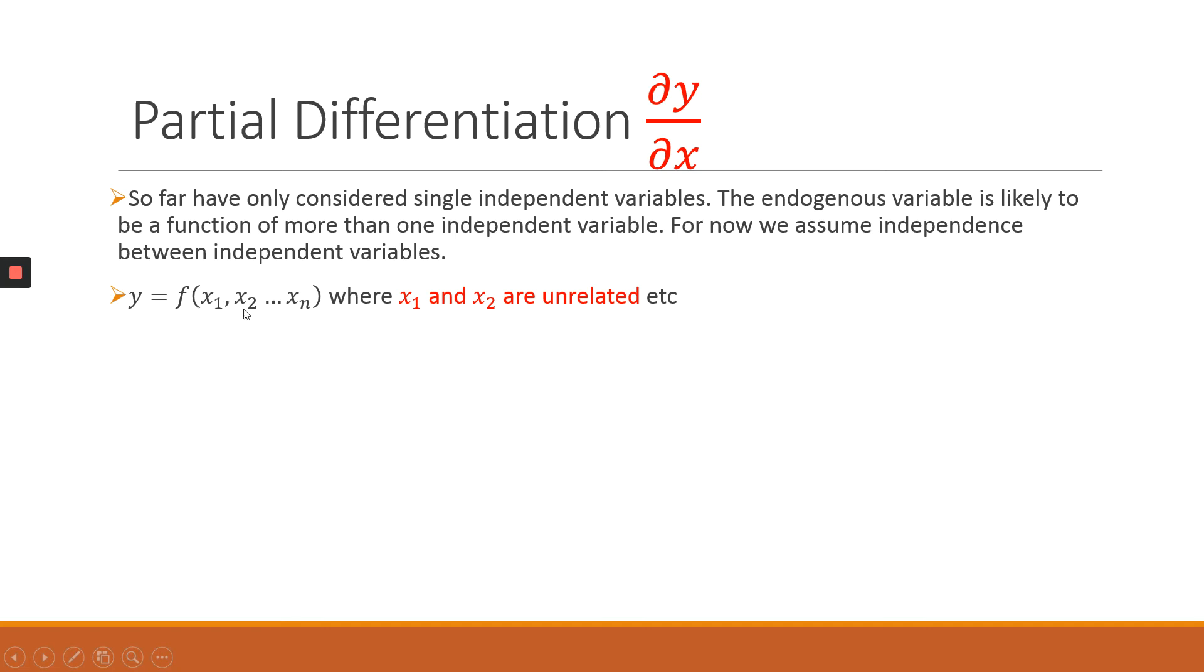But if x1 or x2 changes, these are going to cause your y to change. So when we want to investigate the effect of a change in x, be it x1 or x2 up to xn, what we have to calculate is a partial derivative.